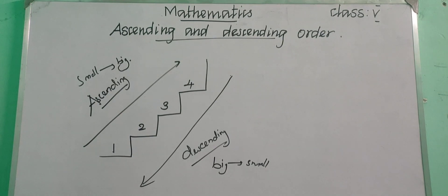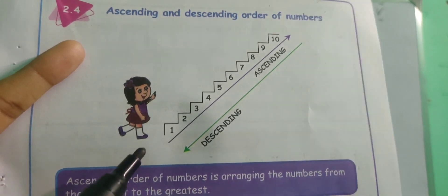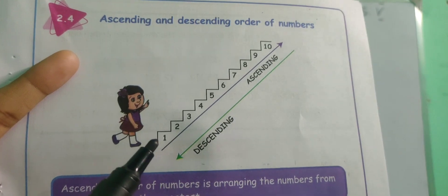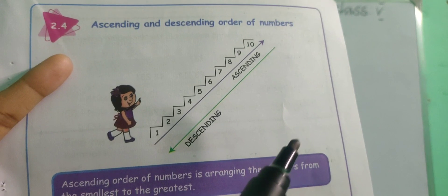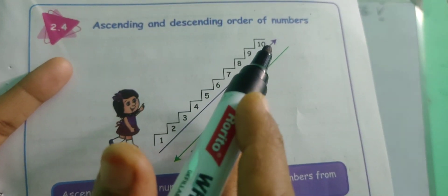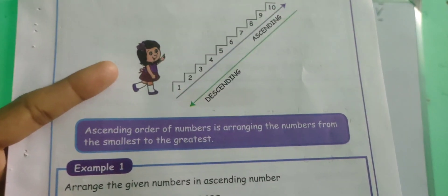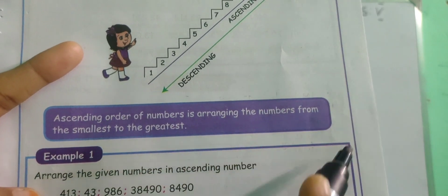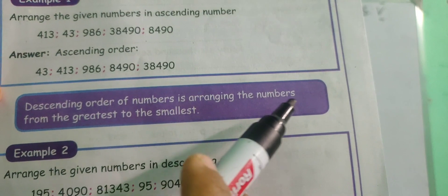Ascending order means from the number 1 to 10 — if you are writing the number from 1 to 10, that is ascending order. Descending order means if you are writing the number from 10 to 1, that is descending order. So ascending order is arranging the numbers from smallest to greatest, and descending order means arranging the numbers from greatest to smallest.